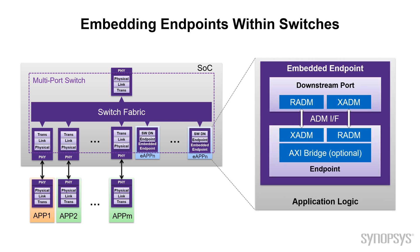Looking at this more closely, what we've really done is streamlined things quite a bit. Not only have we removed the PHYs, but we've removed a lot of the other logic that's not required in order to get your application talking to the host. We've compressed the downstream switch port together with an endpoint and created what we're calling an embedded endpoint. And what's neat about this is, as far as the host is concerned at the upstream port, it doesn't know the difference — when it's talking to an embedded endpoint, it thinks it's talking to another endpoint, the same as the external endpoints shown on the left.